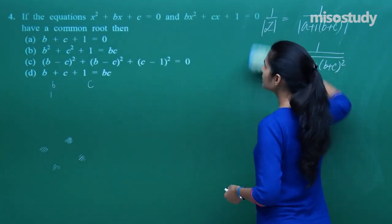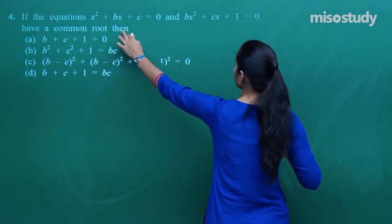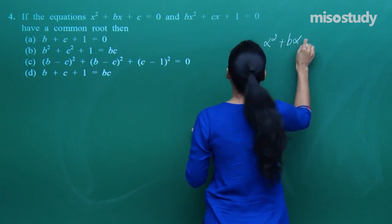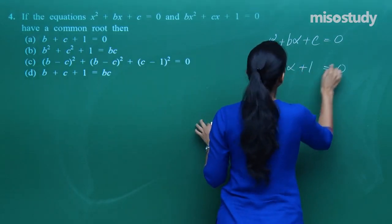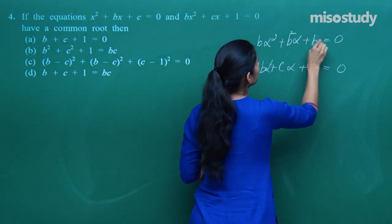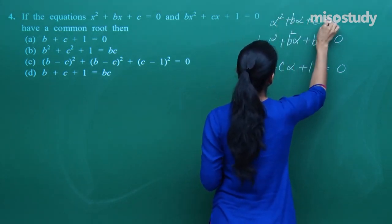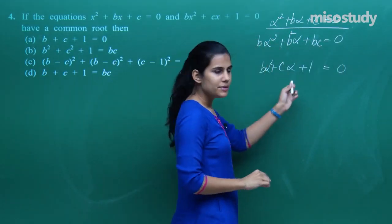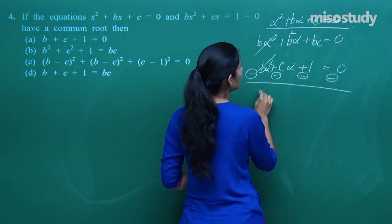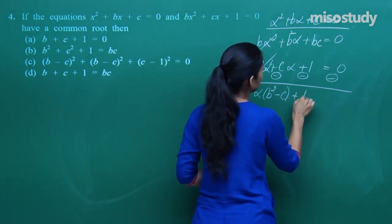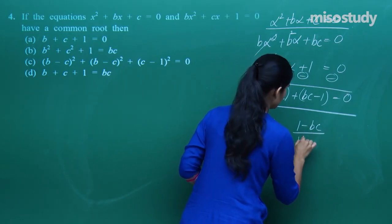Moving on: if the two equations x² + bx + c = 0 and bx² + cx + 1 = 0 have a common root, which option is correct? Suppose α is the common root. Then α² + bα + c = 0 and bα² + cα + 1 = 0. Multiply the first equation by b and subtract to eliminate bα², getting (b² − c)α + (bc − 1) = 0, so α = (1 − bc)/(b² − c).